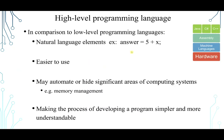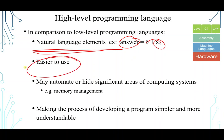So in comparison to a low-level language, a high-level language is using natural language elements, like the word answer. You can use answer, you can use x. And it's also easier to use. You may automate or hide significant areas of computer systems like memory management. In C++ we do not do memory management a lot. Like we do minimal amount of memory management. In Java, for example, mostly you won't do memory management except for maybe a little.